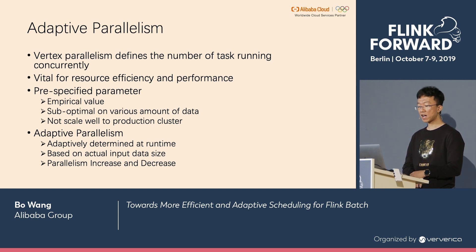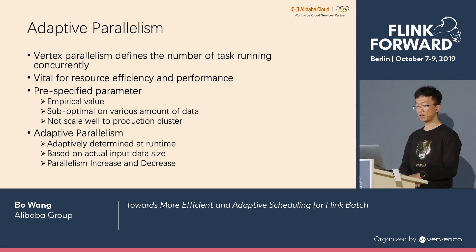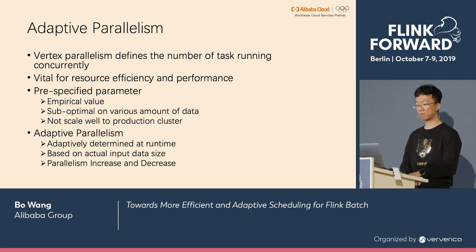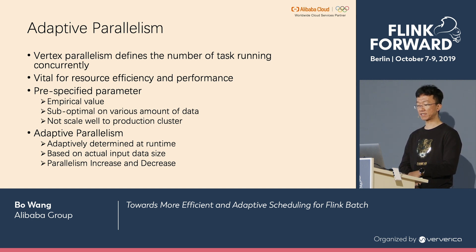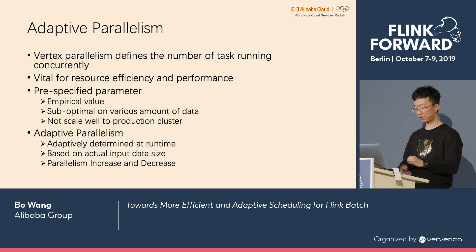To overcome this problem, we introduce adaptive parallelism, which adaptively determines the job parallelism at runtime based on the actual input data size collected from the IO metrics. That means for large input data sizes we increase the parallelism, and for small input data sizes we decrease the parallelism.